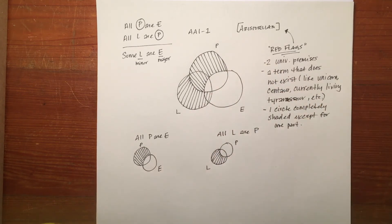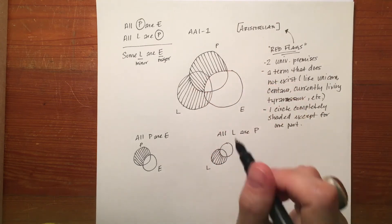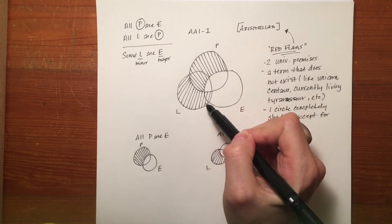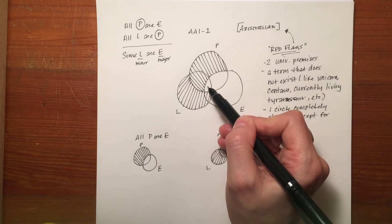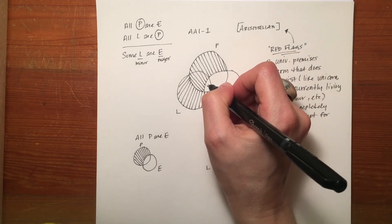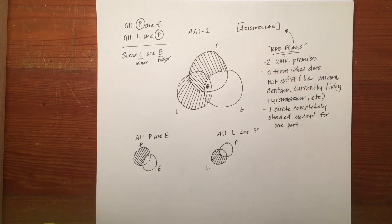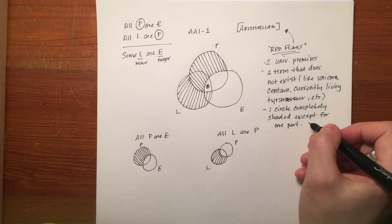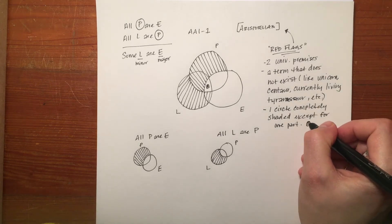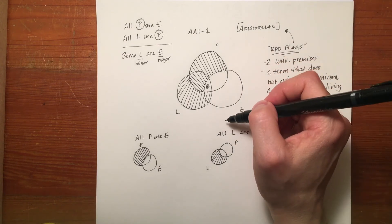At the end, when you've entered both universal premises into the diagram, there's going to be one circle that's completely shaded except for one part. You can see that L is completely shaded in — four parts are all shaded in except for one area. You're going to put a little X with a circle around it there. That symbol has nothing to do with the other X's — that can be confusing, so be aware of that.